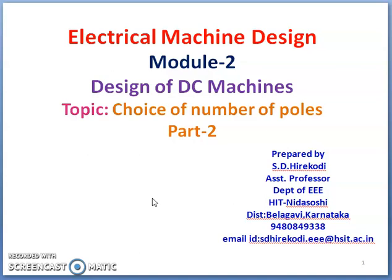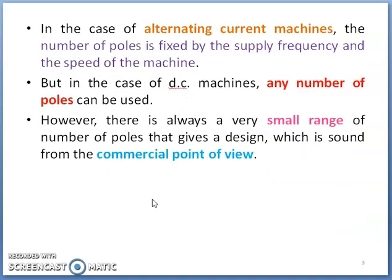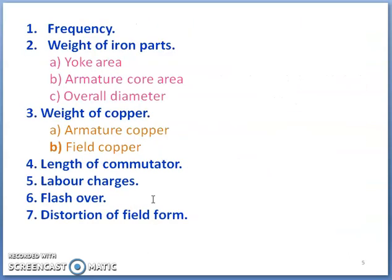This is a continuation of the previous lecture on the discussion of choice of number of poles. In the first part, we already discussed how the choice of number of poles is done depending upon frequency of flux reversal, weight of iron parts in the yoke area, armature core area, and how the overall diameter of the machine gets affected depending upon number of poles.